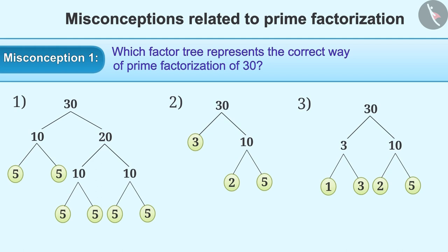While representing a factor tree, sometimes the addition operation is used to find the factor pair. Like in option 1, the addition of 10 and 20 is 30. Similarly, the addition of 5 and 5 is 10. This is an incorrect way of representation.